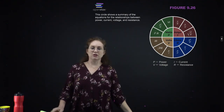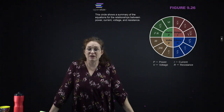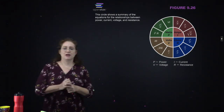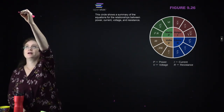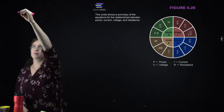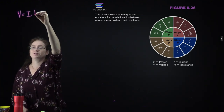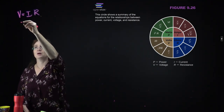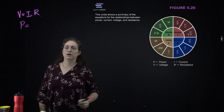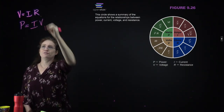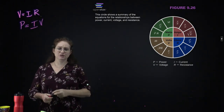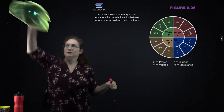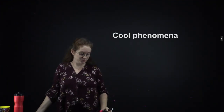Here is a summary of the relationships between power, voltage, and current. The key equations to memorize are Ohm's law — V = IR — which comes up all the time, and power: P = IV. From those two equations you can derive basically everything else.